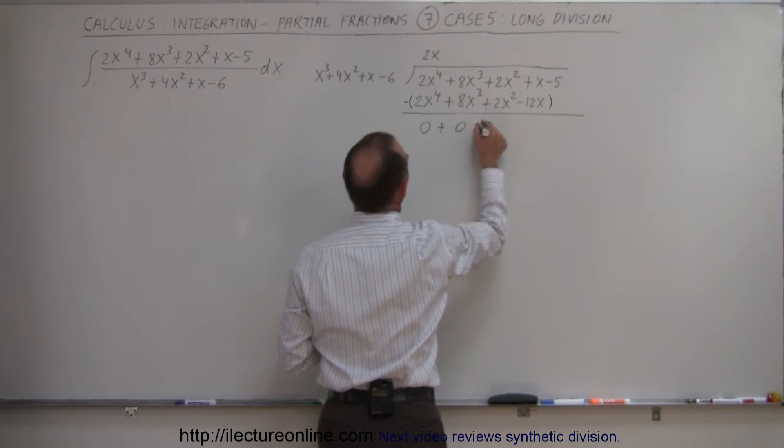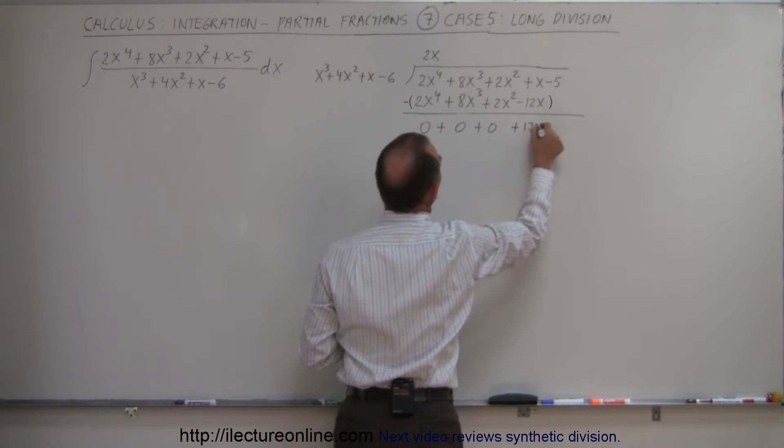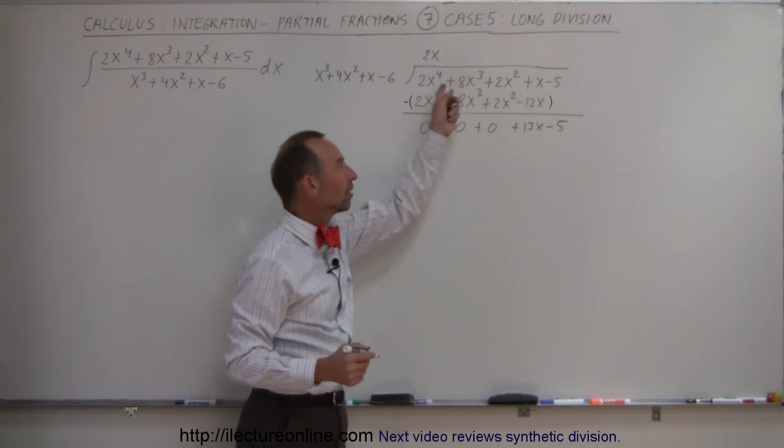I get 0 plus 0 plus 0. This minus this gives me plus 13x. And minus 5 remains. All right, so that would be the remainder of this division.